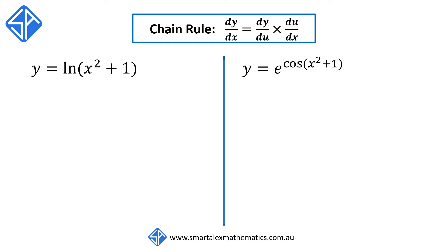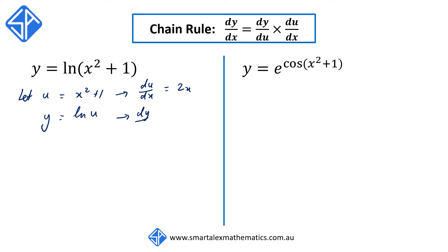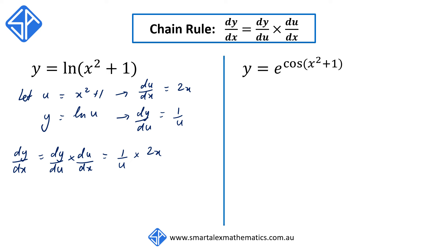Our next example, we've got y is equal to log of x squared plus 1. We begin by letting u equal to x squared plus 1 so that y is equal to log of u. Then du/dx is equal to 2x, and dy/du is equal to 1 over u. Applying the chain rule, dy/dx equals 1 over u times 2x. Replacing u with x squared plus 1, this simplifies to 2x over x squared plus 1.